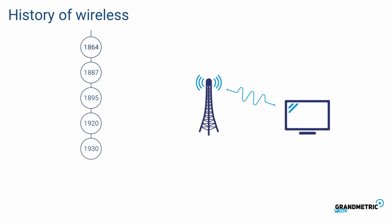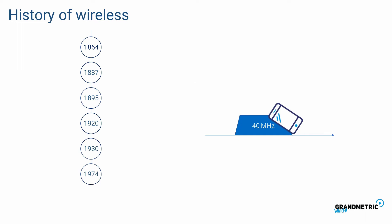In 1920 there was the first commercial radio broadcast. In 1930 BBC began television experiments. In 1974 FCC allocates 40 MHz for cellular telephony. In 1982 European GSM was established. This is where we can say that modern wireless communication began.